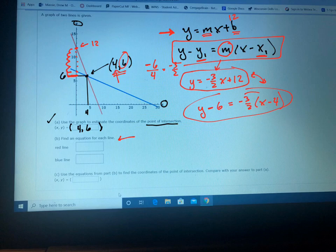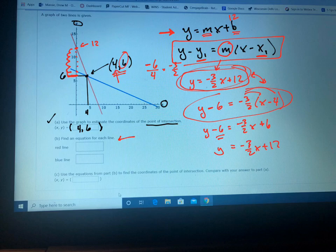You can see it if you distribute this. You distribute this in here, you get negative three halves X plus 6, and then when you move the 6 over you get 12, which is the same equation as right there. So those are both the same equation.